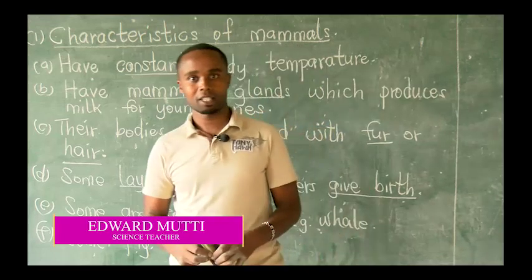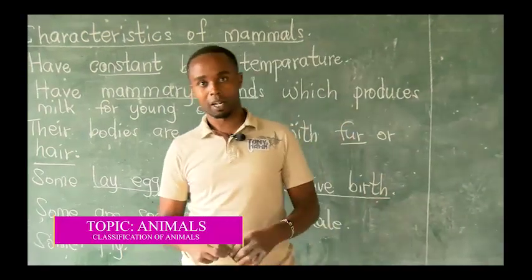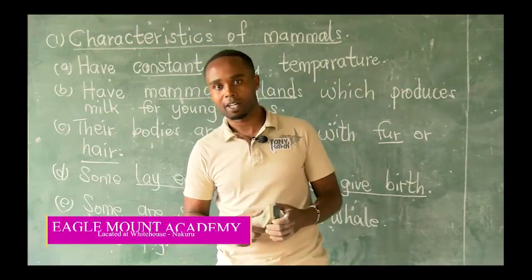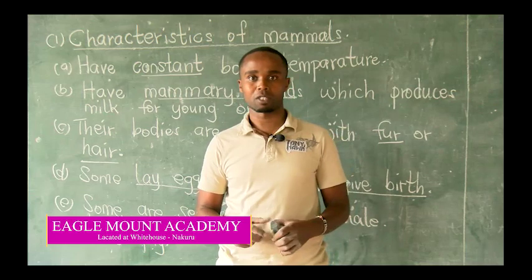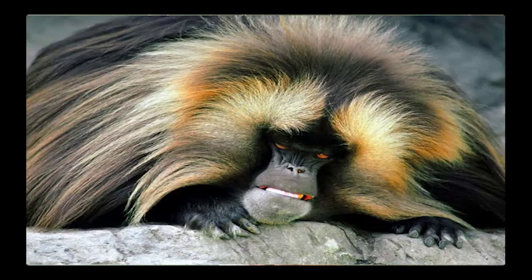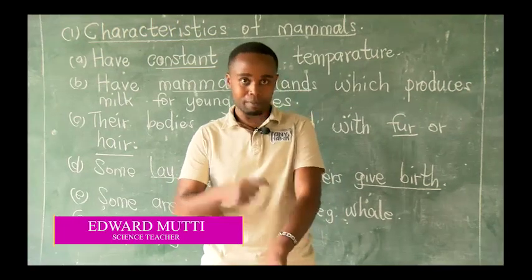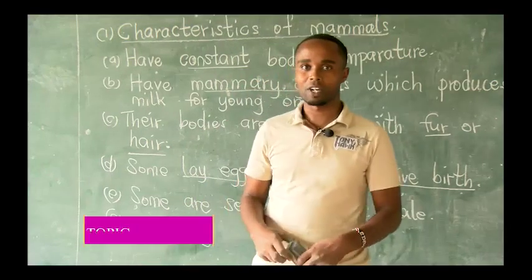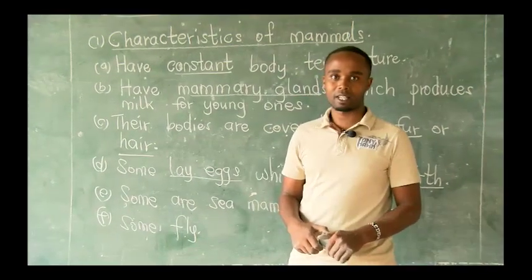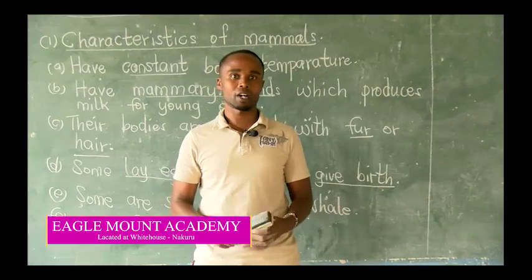Another characteristic is that they have mammary glands, which produce milk for their young ones. So they feed their young ones using milk. The third characteristic is that their bodies are covered with hair or fur. When you look at mammals, their bodies are covered with hair — like us, human beings. Look at my head, my hands. All other mammals have fur, like cows, goats, and so on. So all mammals are either covered by hair or fur.